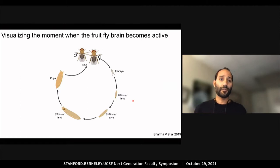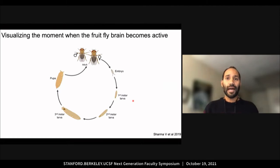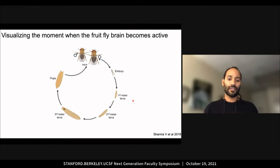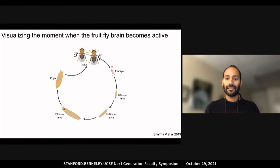I turned to the fruit fly, a system where I could monitor neural activity during the earliest stages of development. This is the life cycle of a fruit fly, and this is an embryo where neural activity begins.